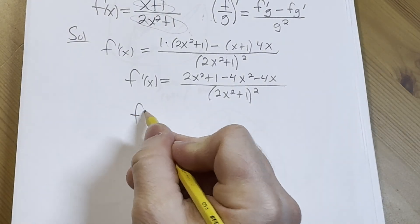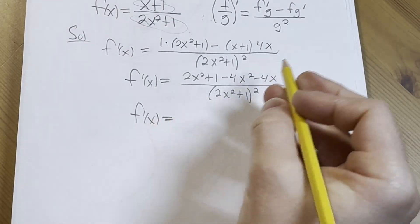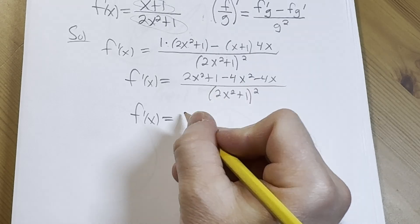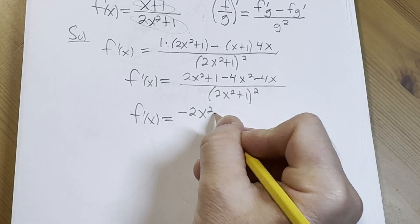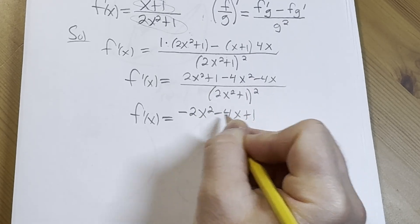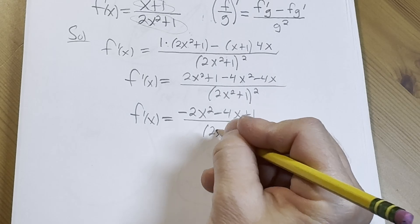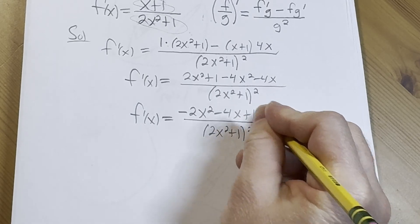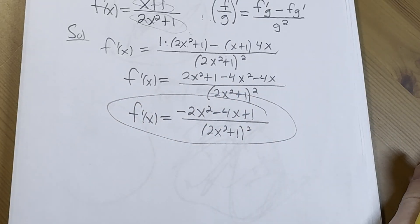So f prime of x equals—we get some cancellation here—2x² minus 4x² is minus 2x², minus 4x plus 1, all over (2x² + 1)². And that's the final answer.